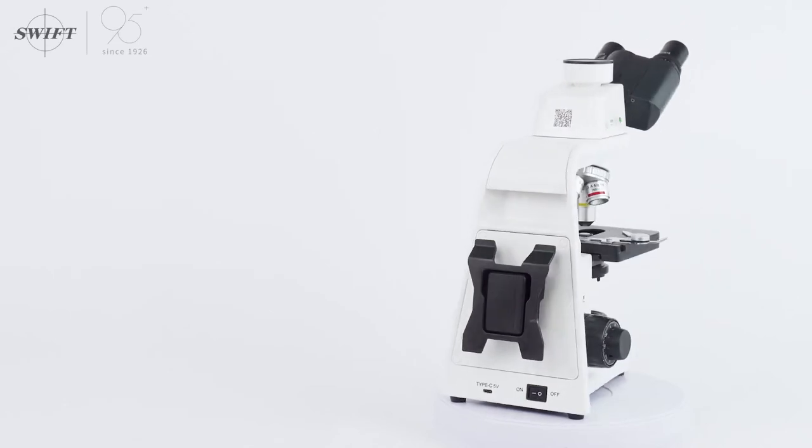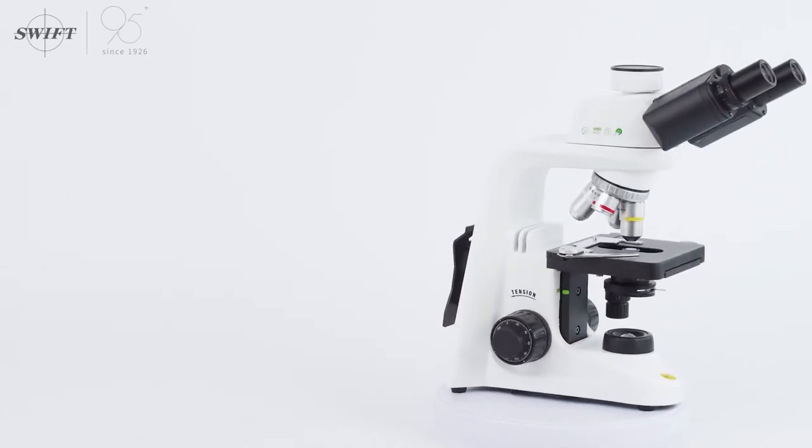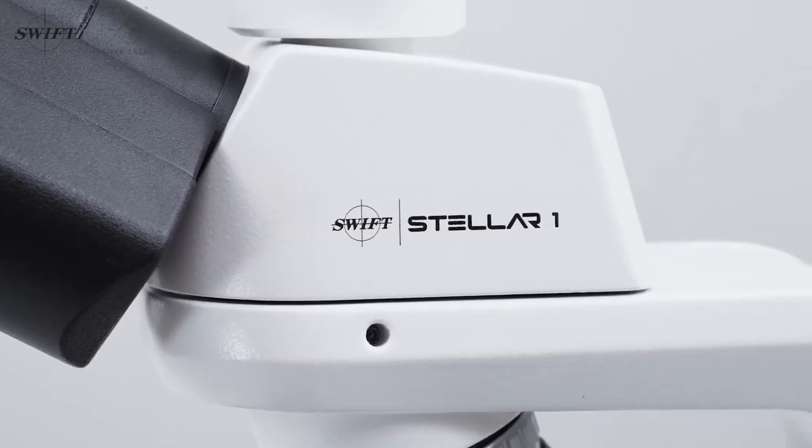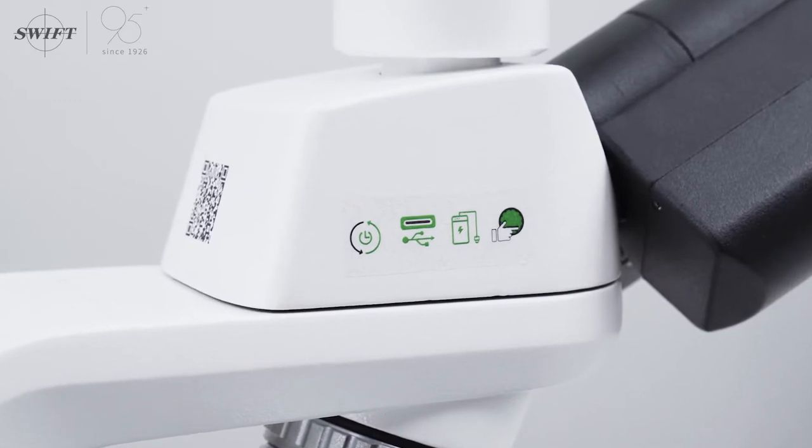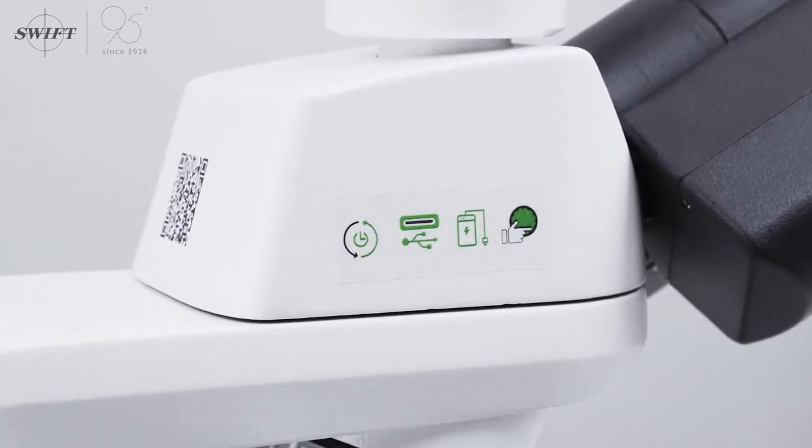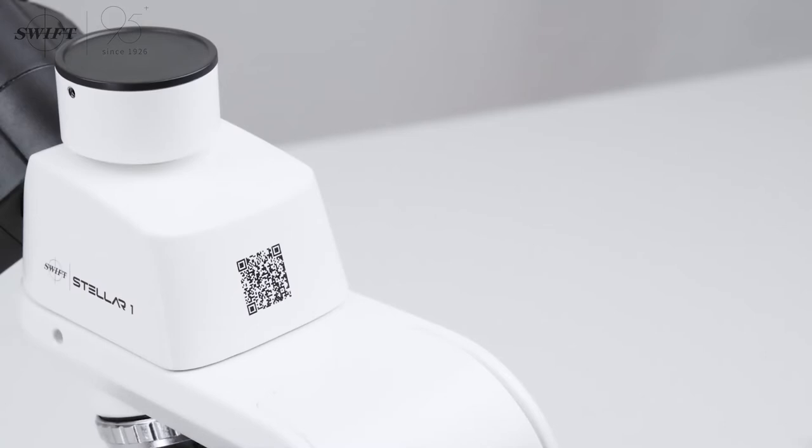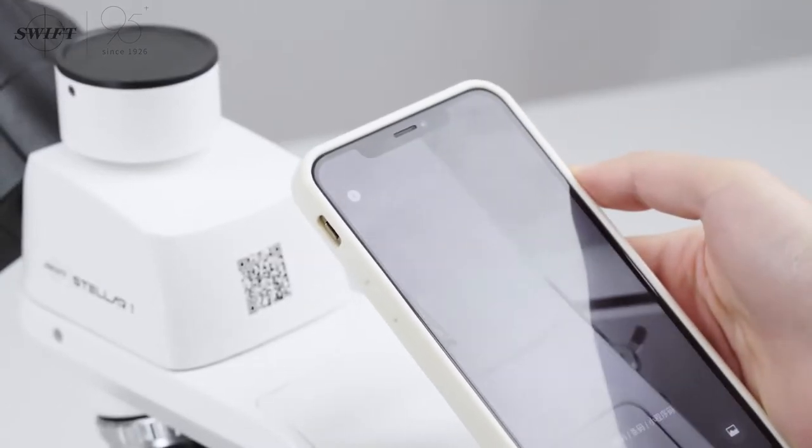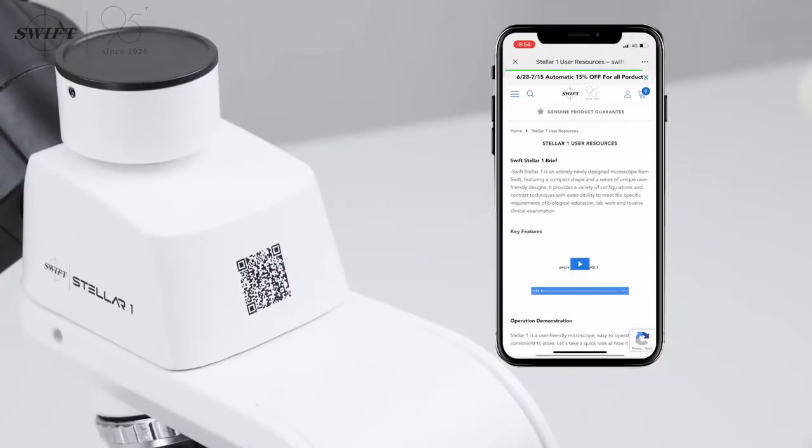Today we will show you how to use the Swift Stellar One Pro Compound Microscope. First, these green marks and QR codes are part of many functions. We can quickly understand the performance of the Swift Stellar One Pro Microscope by scanning the QR code.